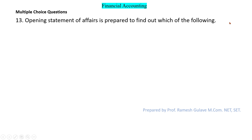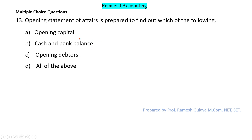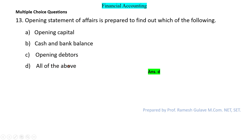The next question says: opening statement of affairs is prepared to find out which of the following? We prepare an opening statement of affairs to find out the opening capital, to calculate cash and bank balance, and to find out the opening debtors balance if all other assets and liabilities are given but the debtors balance is missing. So option D is the right answer.